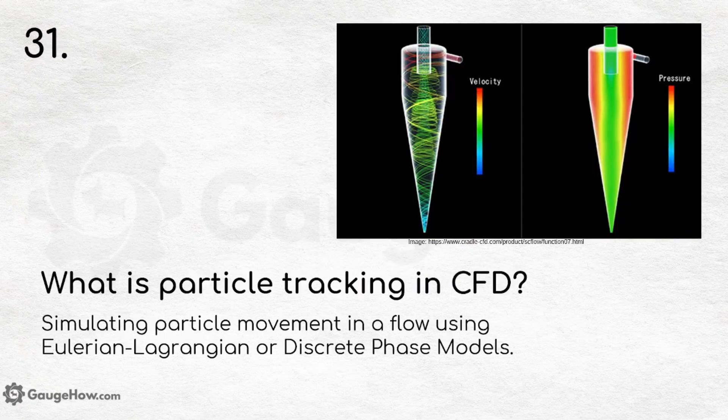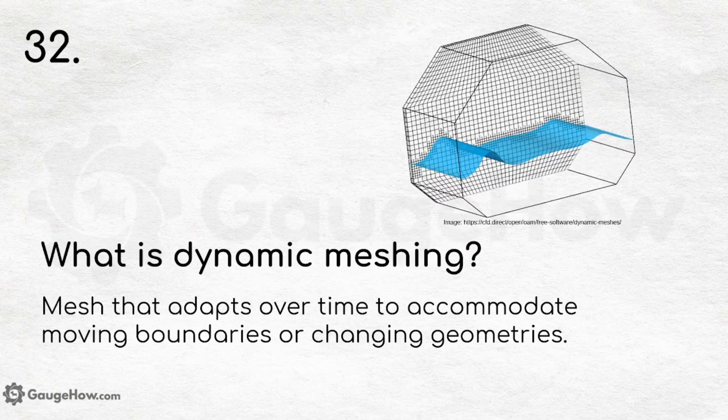What is particle tracking in CFD? Particle tracking involves simulating particle movement in a flow using Eulerian, Lagrangian, or discrete phase models.